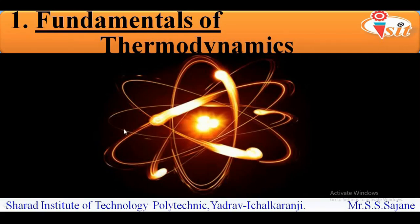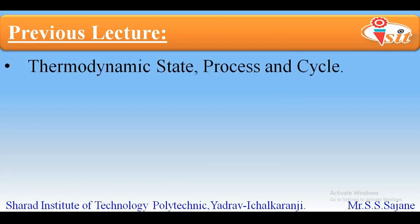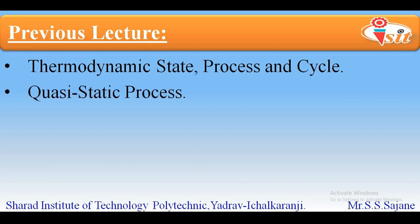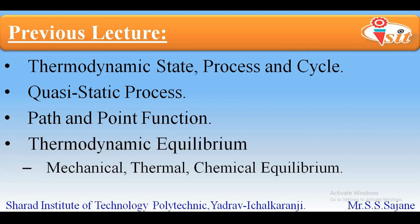Hello friends, this is my third lecture on the topic fundamentals of thermodynamics. We will review what we covered in the second lecture. In the previous lecture, we saw what is thermodynamic state, process and cycle. Next, we saw what is a quasi-static process along with its example. Then we saw what are path and point functions and their difference. The last point we concluded with was thermodynamic equilibrium — all three types: mechanical, thermal, and chemical equilibrium. Today we will start with the next point.